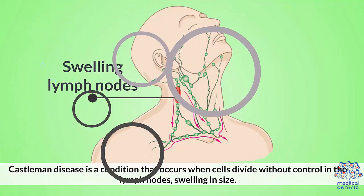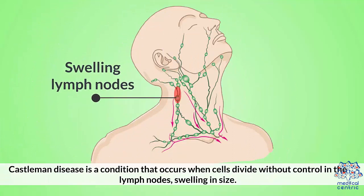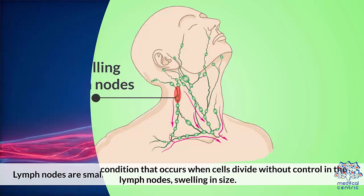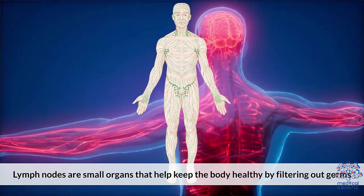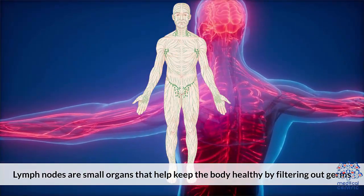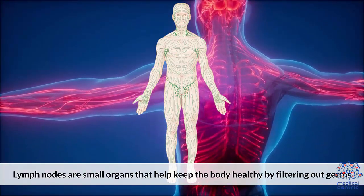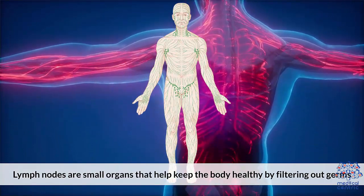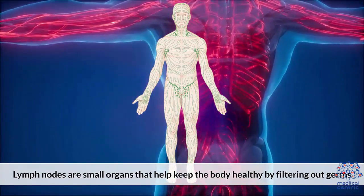Castleman disease is a condition that occurs when cells divide without control in the lymph nodes, causing swelling and increase in size. Lymph nodes are small organs that help keep the body healthy by filtering out germs.